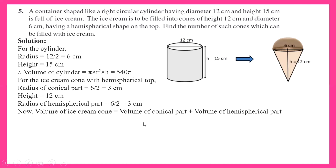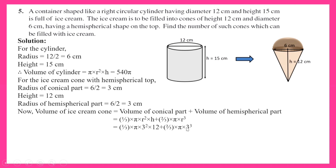The volume of the complete ice cream cone equals the volume of the conical part plus the volume of the hemispherical part. That is 1 upon 3 pi r squared h plus 2 upon 3 pi r cubed. Putting r equal to 3 and h equal to 12, I get 1 upon 3 pi into 3 squared into 12 plus 2 upon 3 pi into 3 cubed. Taking 1 upon 3 pi into 3 squared common, I am left with 12 plus 2 into 3, which is 12 plus 6 equals 18. After cancellation I get 3 pi into 18, which equals 54 pi. So that is the volume of the ice cream cone.